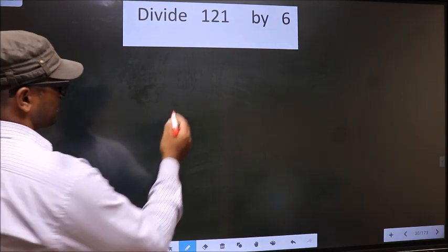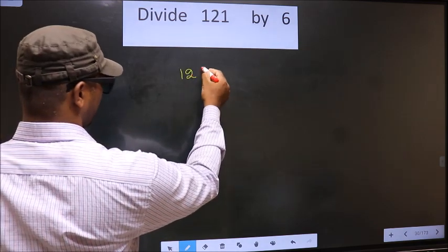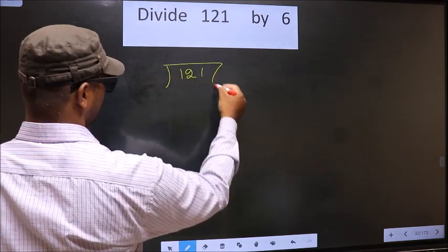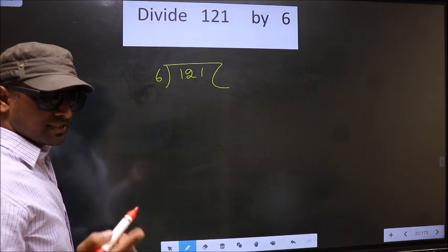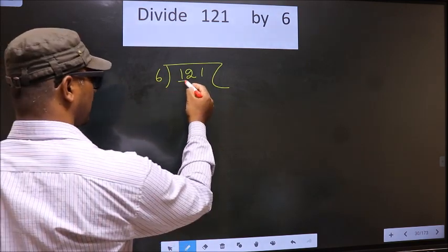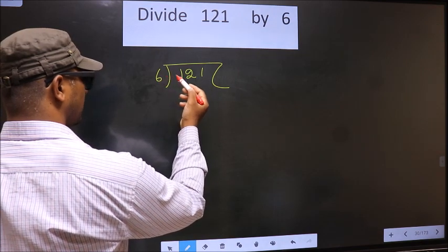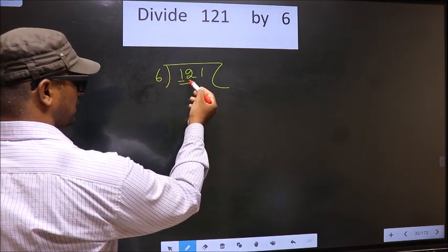this way, that is 121 divided by 6 here. Okay. Next, now here we have 1. 1 is smaller than 6, so we take two numbers, that is 12.